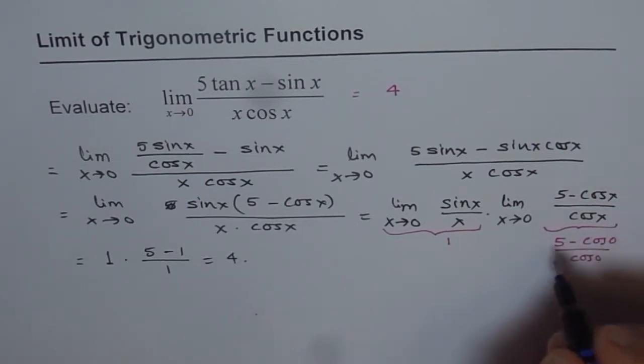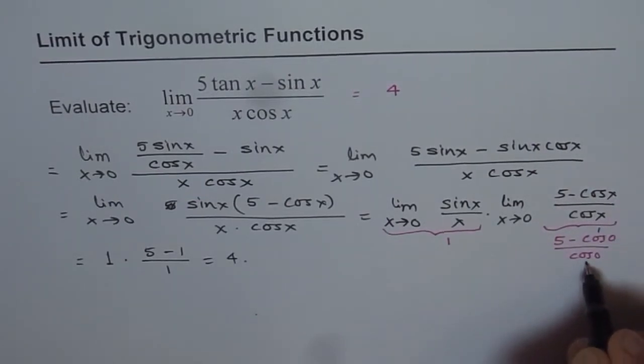So we can write this as: this is 1, this is also 1. So 5 - 1 is 4. 4 divided by 1 is 4.